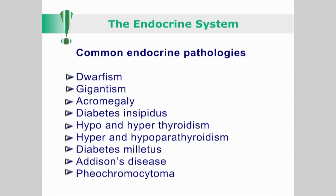Let us briefly mention some of the commonest endocrine pathologies. These are dwarfism, gigantism, acromegaly, diabetes insipidus, hypo- and hyperthyroidism, hypo- and hyperparathyroidism, diabetes mellitus, Addison's disease, and pheochromocytoma.